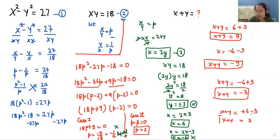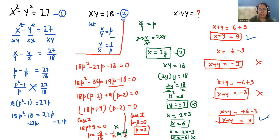We reject the negative values, so the value of x plus y is 9 and 3. I hope it's clear and easy to solve. If you find it useful please give us a thumbs up and do subscribe to my channel. Stay tuned.